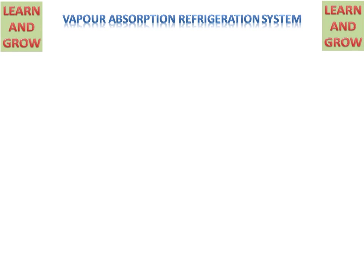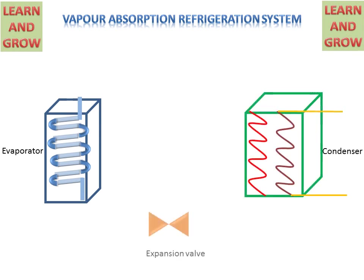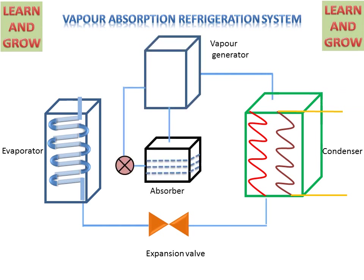Firstly, we will discuss about parts of the vapor absorption refrigeration system. We have an evaporator, a condenser, an expansion valve, and these are connected with the help of pipes. The main components in the vapor absorption refrigeration system are the vapor generator, absorber, and pump. In a vapor compression system, there will be a compressor instead of the vapor generator, pump, and absorber. This is the main difference between vapor compression and vapor absorption refrigeration systems.